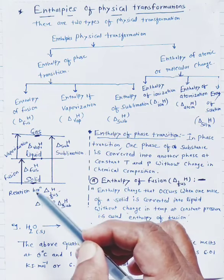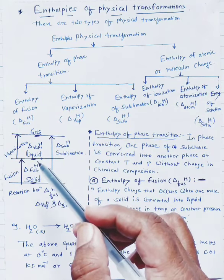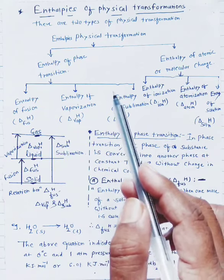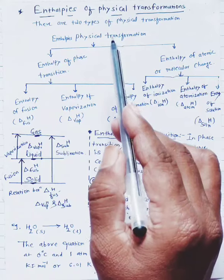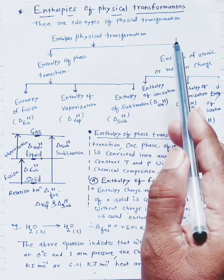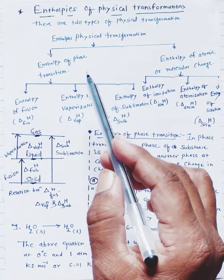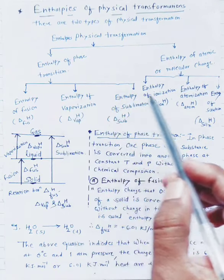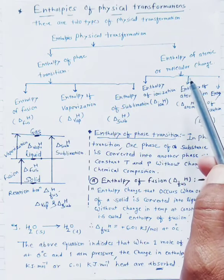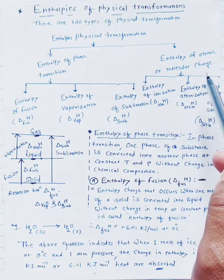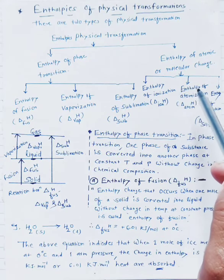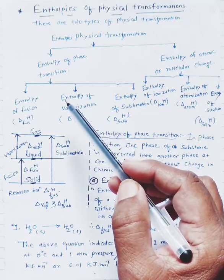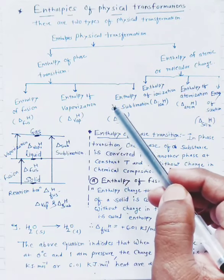For example, solid to liquid, liquid to gas, and solid directly to gas — these are the physical transformations. There are two types. One is the enthalpy of phase transition, and the other is the enthalpy of atomic or molecular changes. The enthalpy of phase transition is classified in three ways.